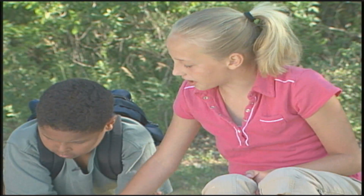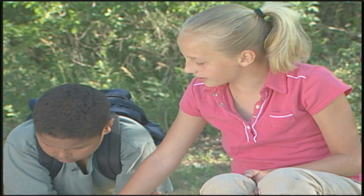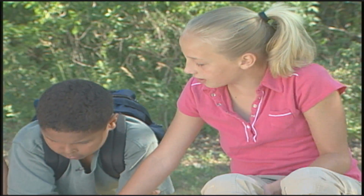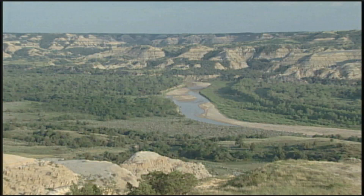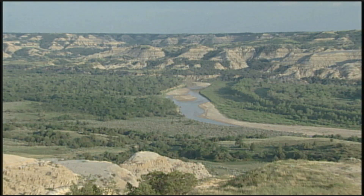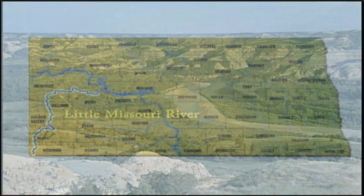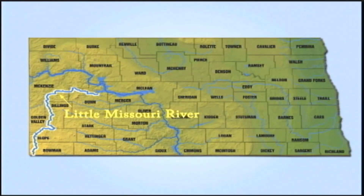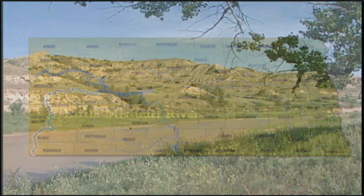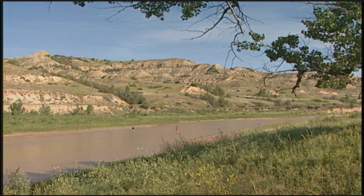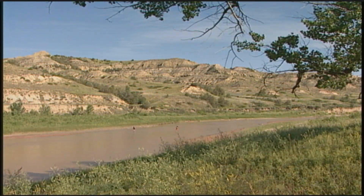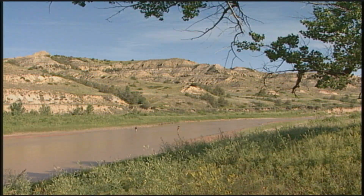I found a river in the southwest corner of the state, the Little Missouri. The Little Missouri River runs through the southwestern portion of North Dakota, where it is drier, and the riparian zone is made up of a variety of thick grasses, plants, and some cottonwood trees.